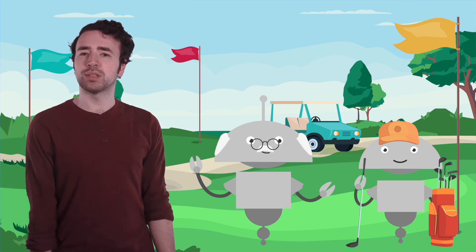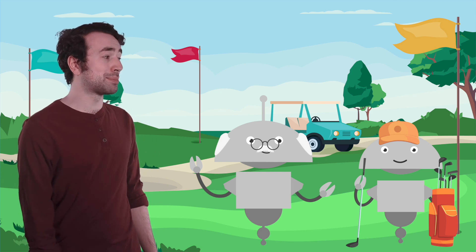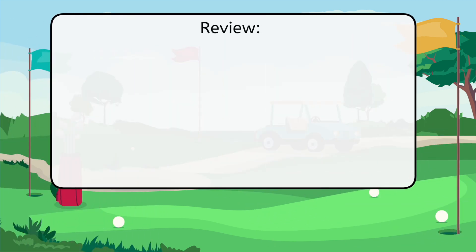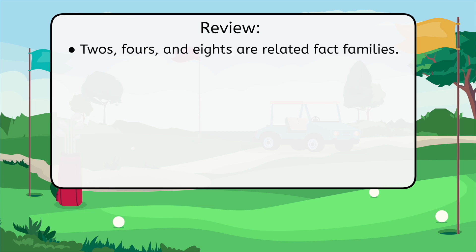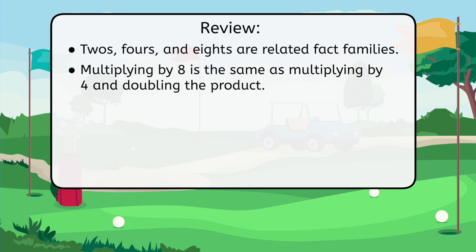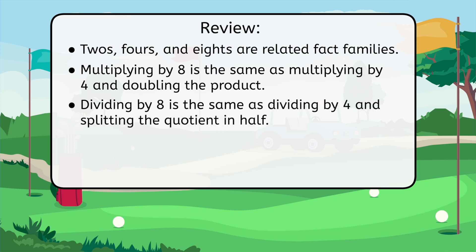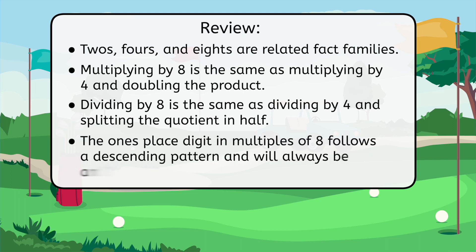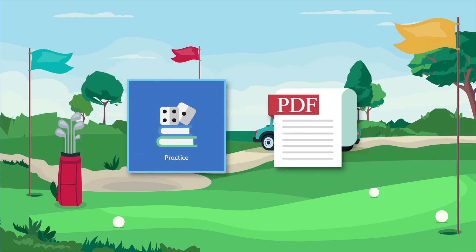So what have we learned today, besides the fact that Nate's a natural when it comes to navigating his eights? Now you know that twos, fours, and eights are related fact families. Multiplying by eight is the same as multiplying by four and then doubling the product, while dividing by eight is the same as dividing by four and splitting the quotient in half. You also know that the ones place digit in multiples of eight follows a descending pattern, and will always be an eight, six, four, two, or zero. This pattern can help us efficiently skip count by multiples of eight and check our work. Be sure to complete the practice questions and extension activities that go with this lesson to practice multiplying and dividing by eight.